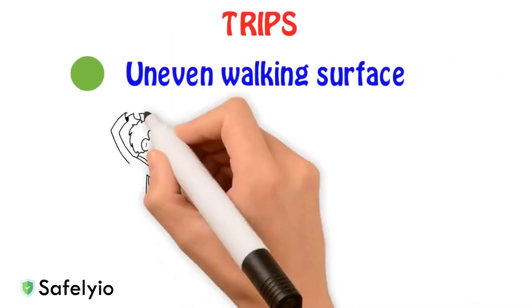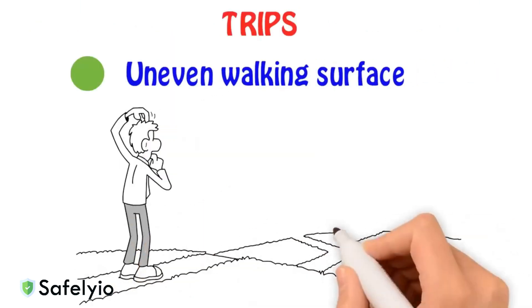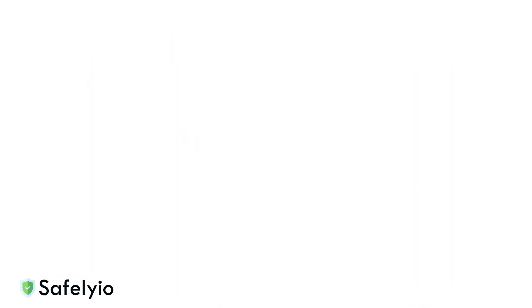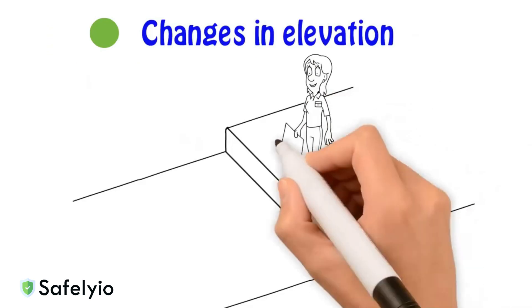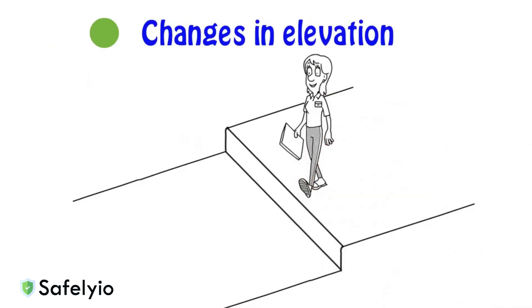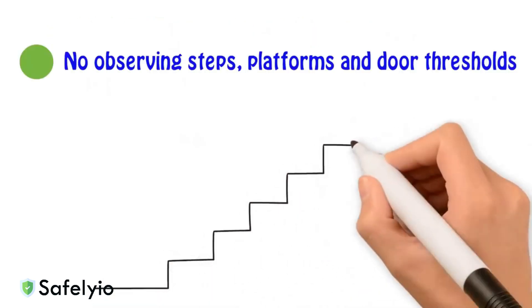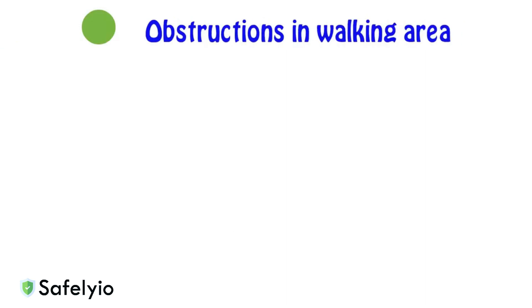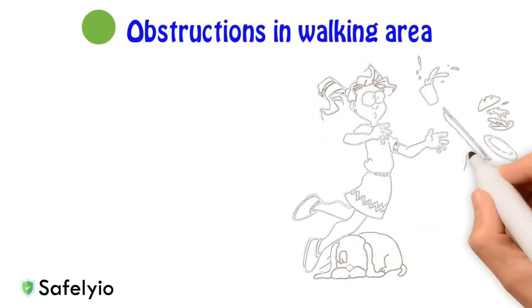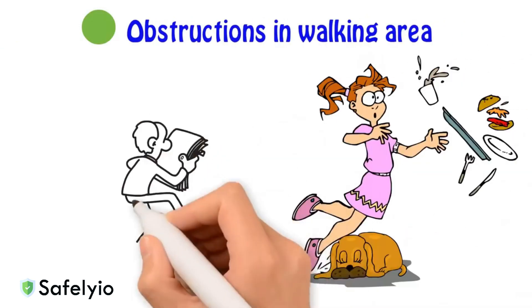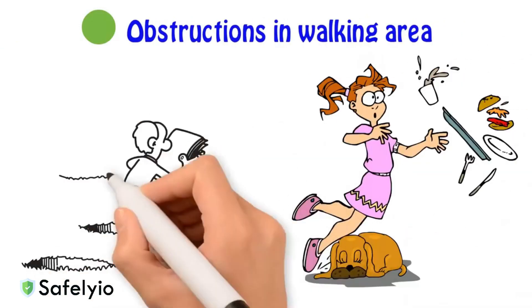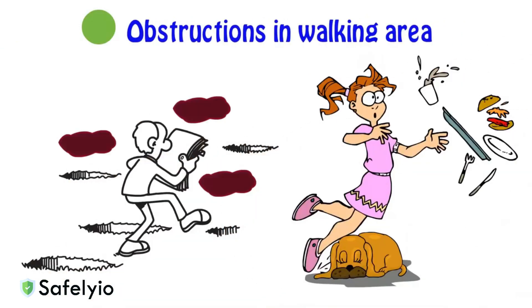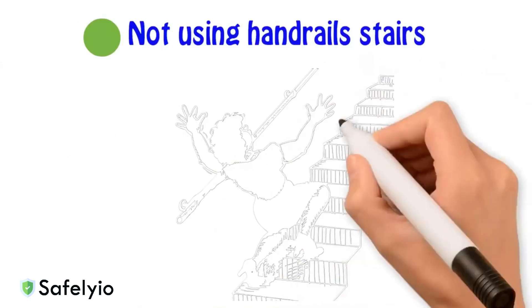Trips: uneven walking surfaces, changes in elevation, not observing steps, platforms, and door thresholds. Obstructions in the walking area like open drawers, holes, trash, or electrical cords. Not using handrails on stairs.